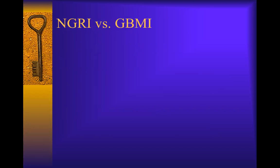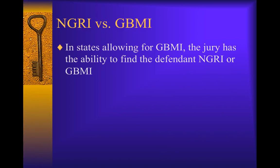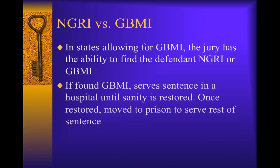The introduction of the guilty but mentally ill (GBMI) verdict in many states is the biggest development in insanity defense laws since the post-Hinckley reforms. A sort of hybrid alternative to an acquittal by reason of insanity, a defendant who receives a GBMI verdict is still considered legally guilty of the crime in question, but since he is mentally ill, he is entitled to receive mental health treatment while institutionalized. If his symptoms remit, however, he is required to serve out the remainder of his sentence in a regular correctional facility, unlike a defendant acquitted by reason of insanity, who must be released if it is determined he is no longer dangerous to himself or others. In 2000, at least 20 states had instituted GBMI provisions.